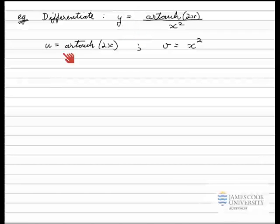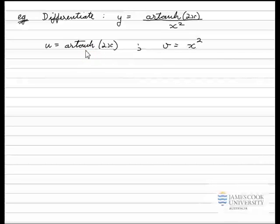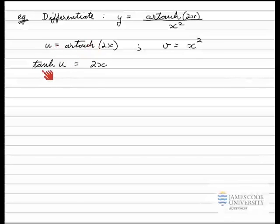On the left-hand side, u is equal to artanh(2x). Using the four-step method for inverse hyperbolic functions, the first step is to eliminate the inverse function. Writing down the equivalent statement: tanh(u) is equal to 2x. These two are equivalent statements — artanh(2x) = u, so therefore tanh(u) must equal 2x.